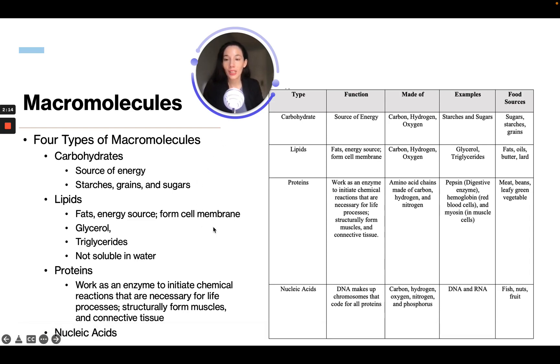Then we have our proteins, which work as an enzyme to initiate chemical reactions. They are necessary for life processes and structurally form muscles and connective tissues. They are made of amino acid chains made of carbon, hydrogen, and nitrogen. Some examples are pepsin, a digestive enzyme, hemoglobin on red blood cells, and myosin in muscle cells.